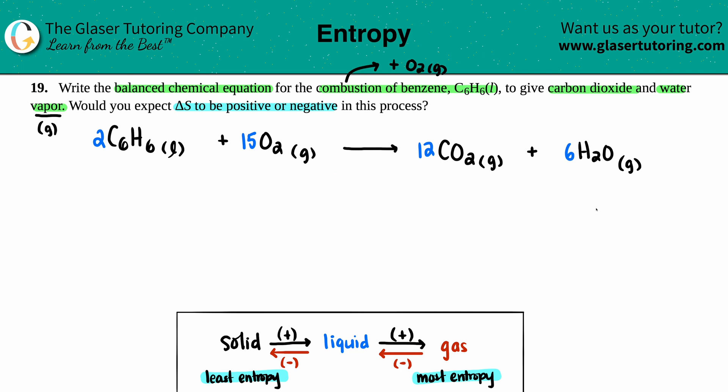Now we're ready to answer the next part: would we expect that delta S to be positive or negative? Well, remember, delta S is a change in entropy, and when we're talking about entropy we're talking about the randomness, randomness or chaos or disorder in a system.